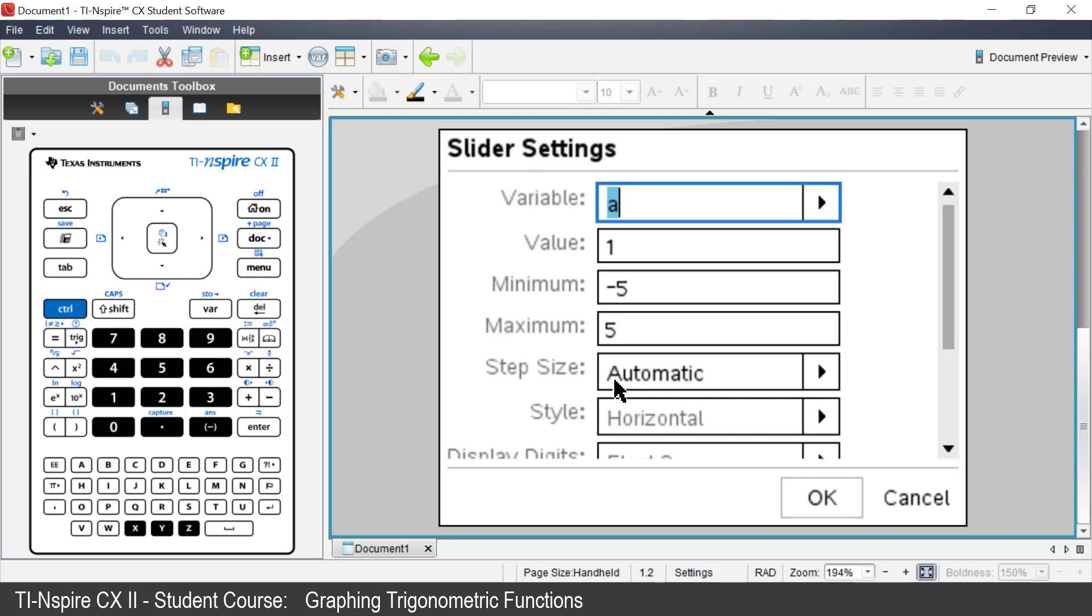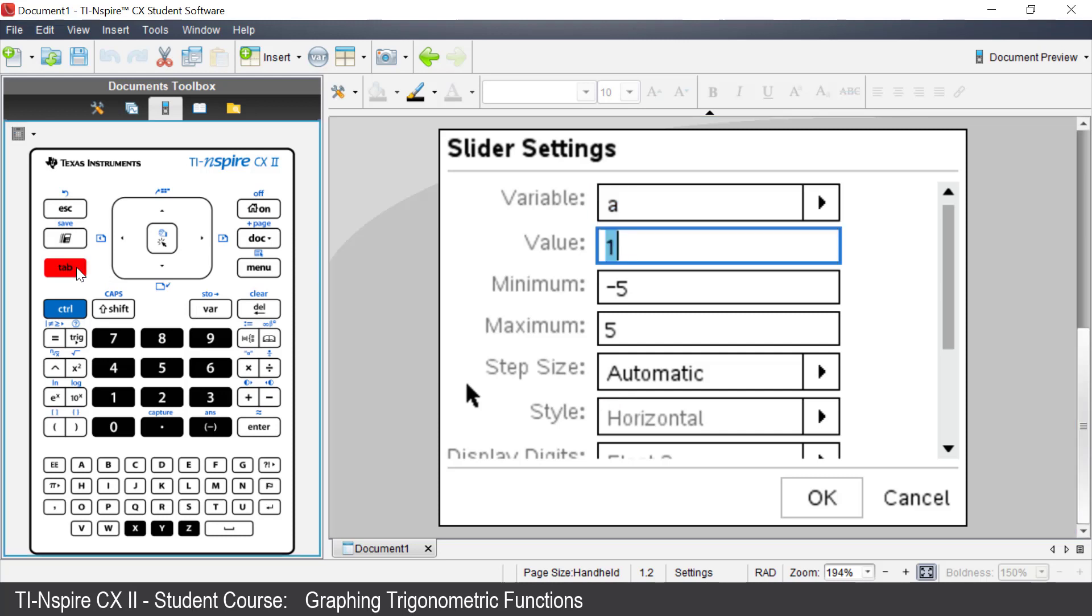A will be starting at 1. Tab down to Step Size and enter 1. Tab to Style. Right arrow and change to Vertical.